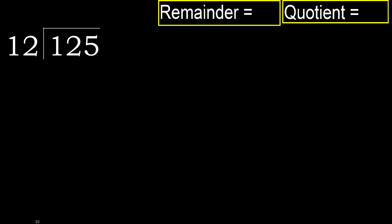125 divided by 12. 1 is less, therefore next. 12 is not less, therefore with 12. 12 multiplied by which number is nearest?